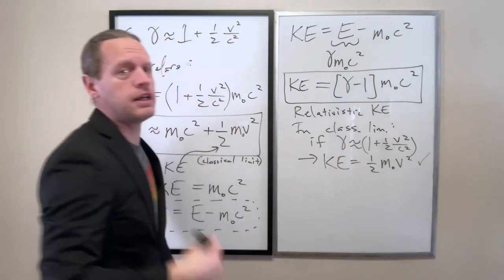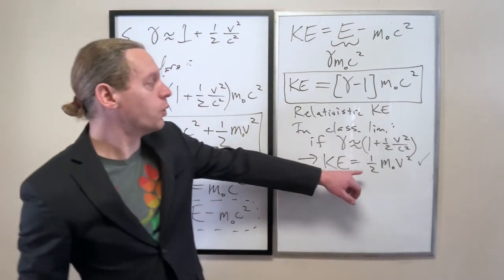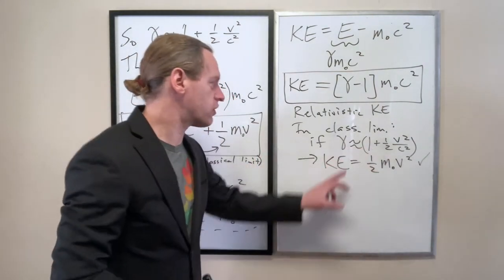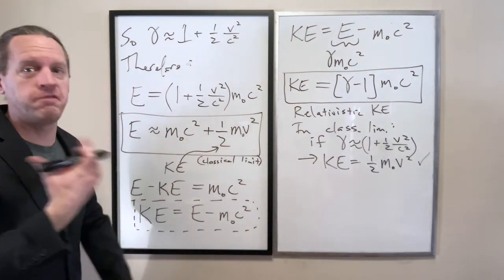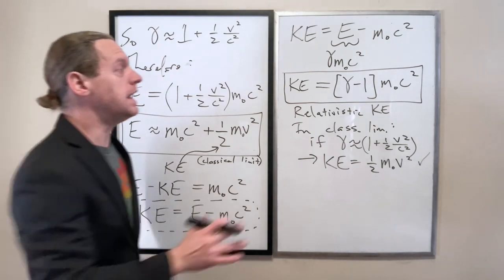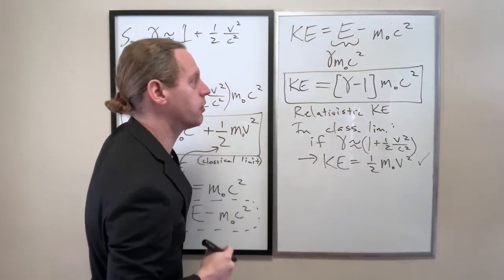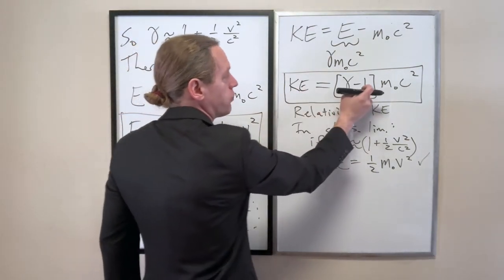So it does check out. It gives us exactly what we expect when, again, when we do that Taylor expansion. And if it didn't we would be in deep trouble because we've already done that once and gotten that result. So we're effectively checking here that in the relativistic limit it does still check out. But we have a more general way of writing it now.